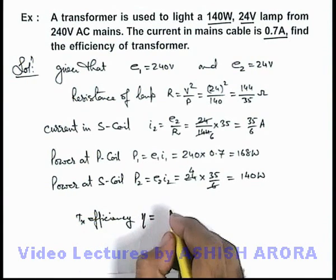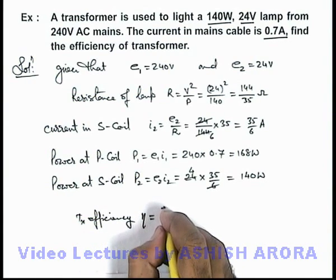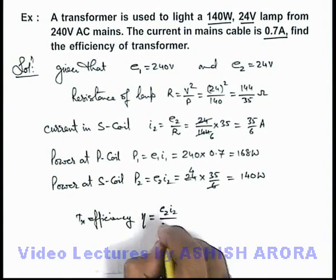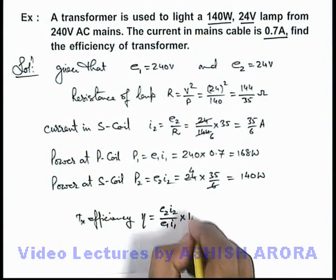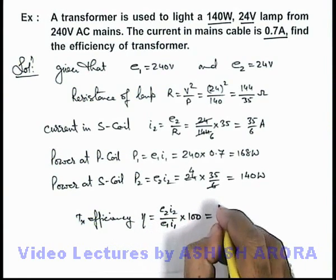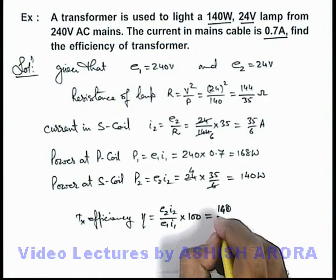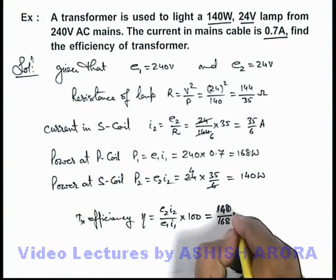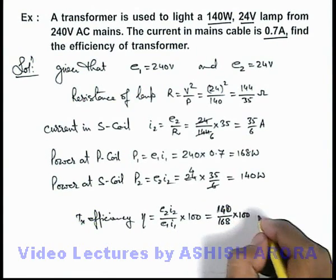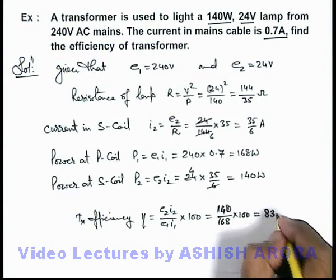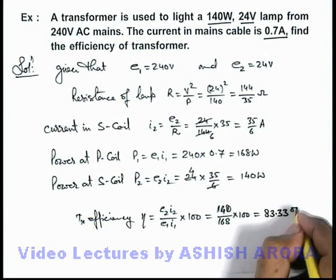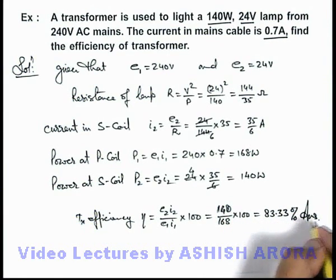Now we can directly write the transformer efficiency. Eta is equal to E2 I2 upon E1 I1 multiplied by 100, so if we substitute as 140 divided by 168 multiplied by 100, on simplifying we are getting its efficiency to be 83.33 percent. That will be the answer to this problem.